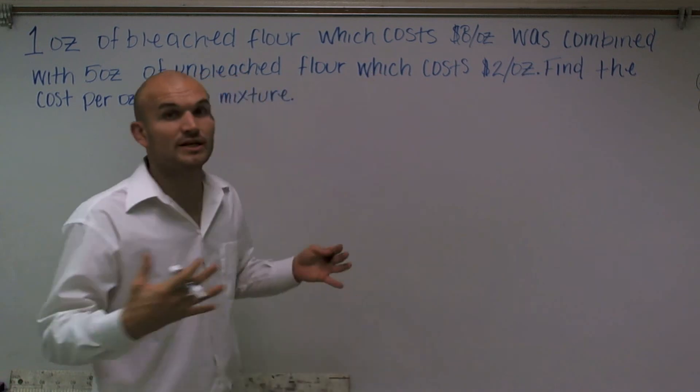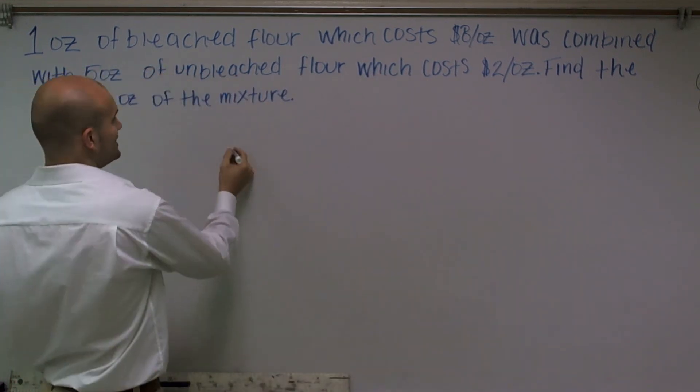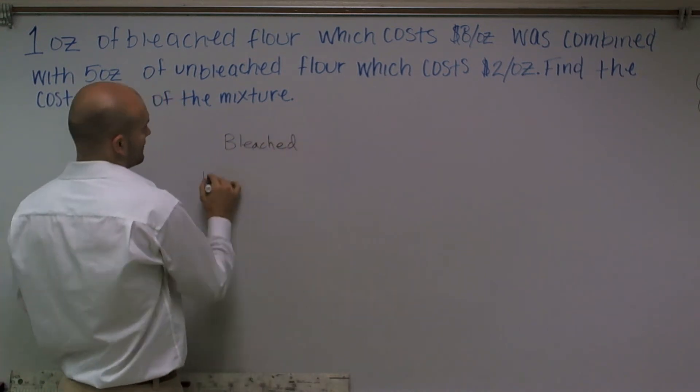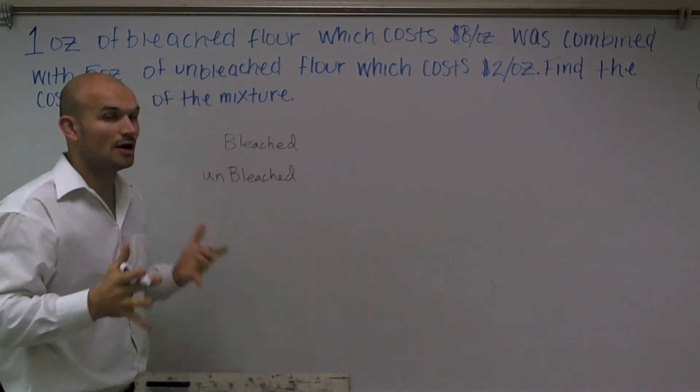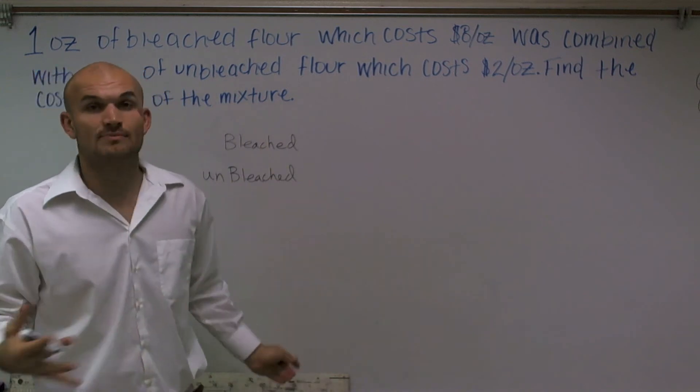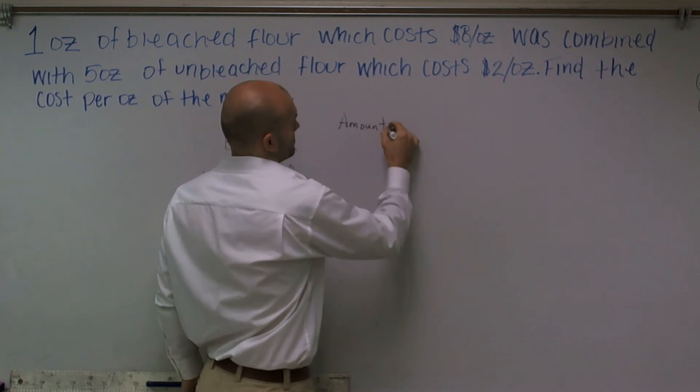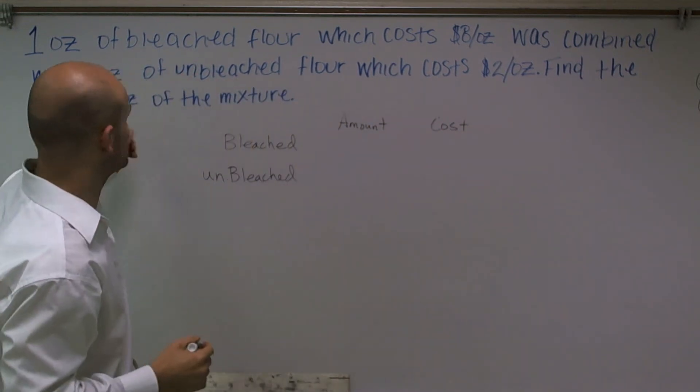First thing we need to do is we need to organize all this. So we have two types of flour: we have bleached and we have unbleached. So there's a couple things that they talked about. One thing was they talked about the amount and they talked about the cost. So let's just write that out right now: we have amount and we have cost. And they also want to know the cost per ounce.